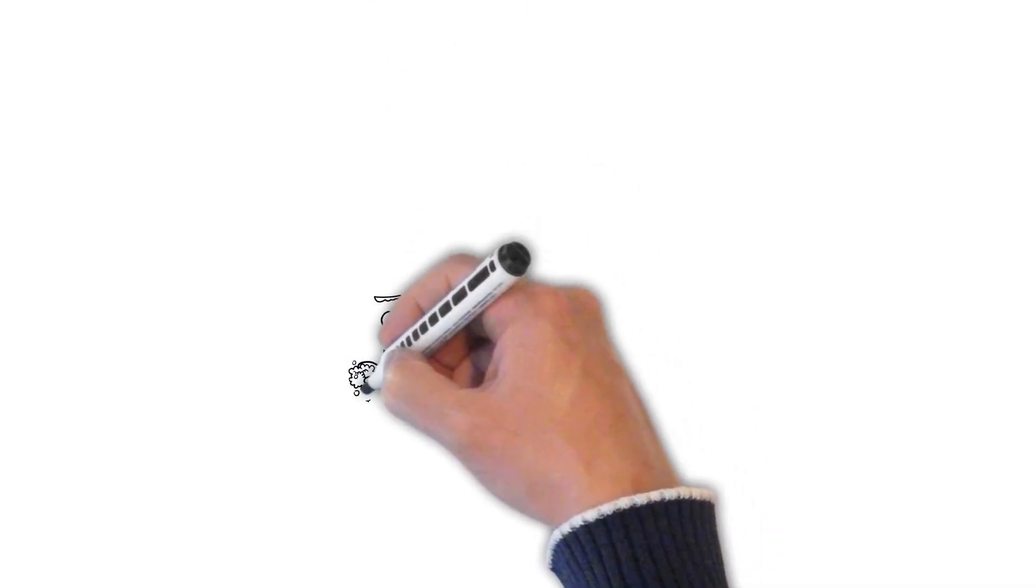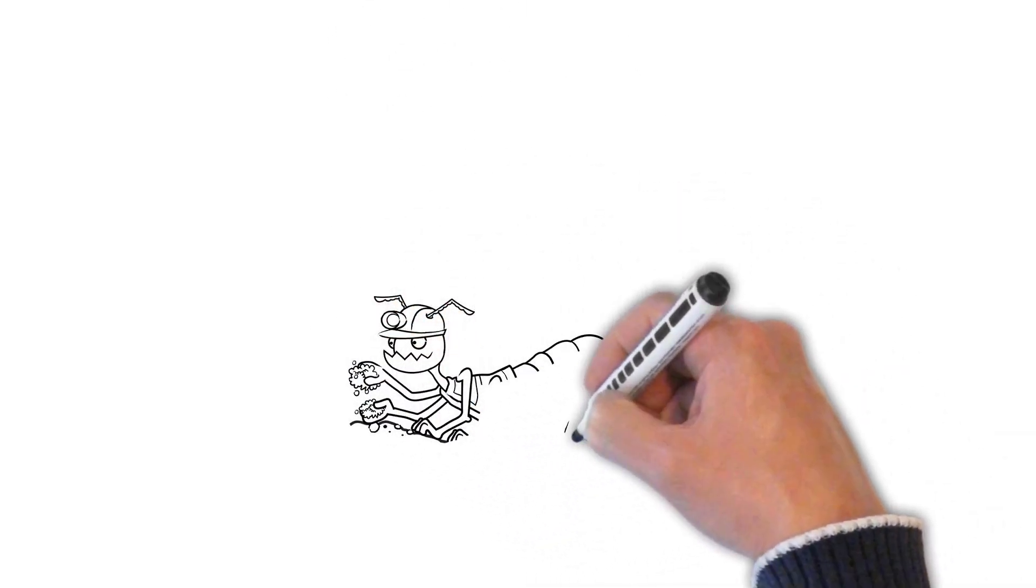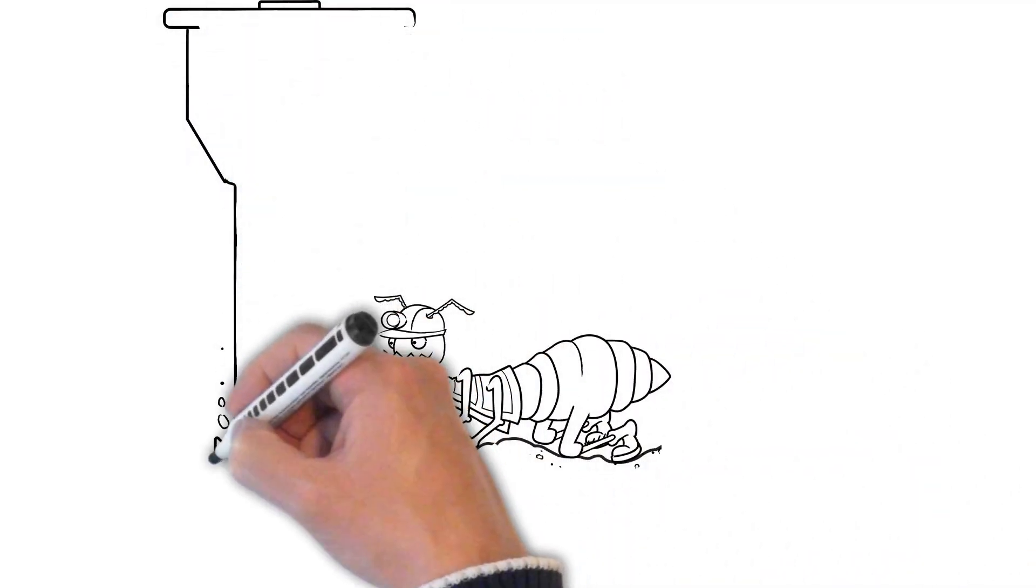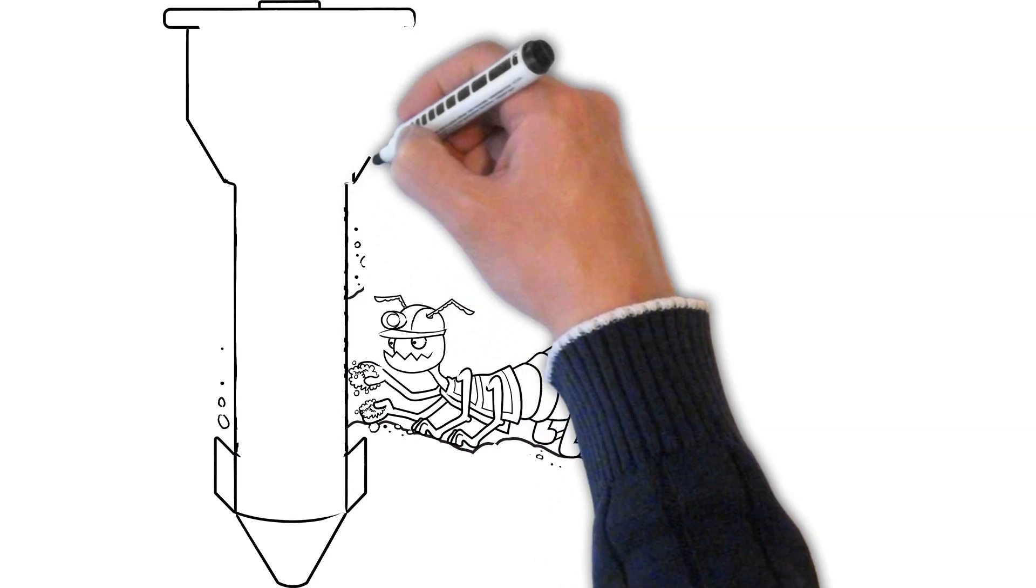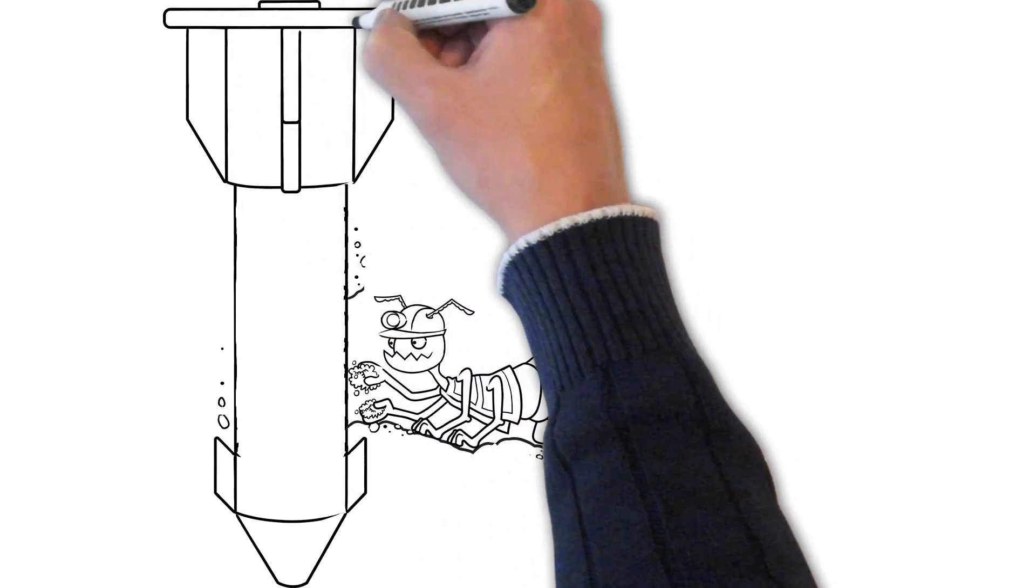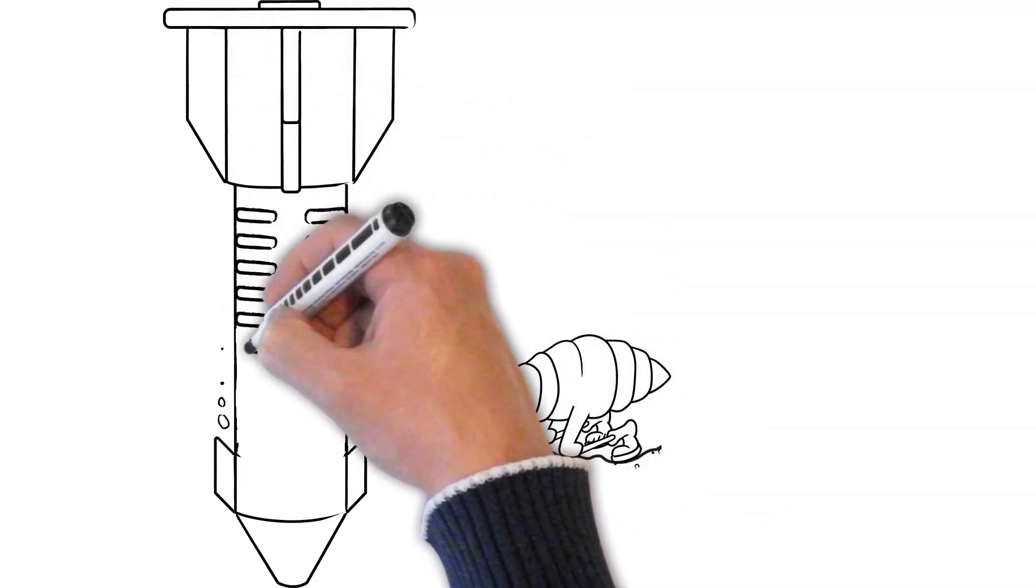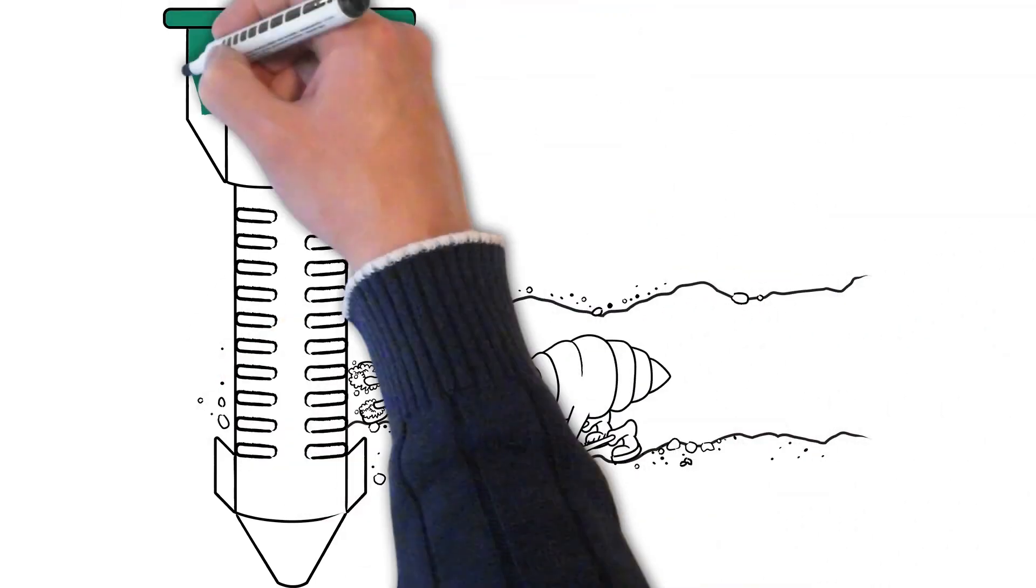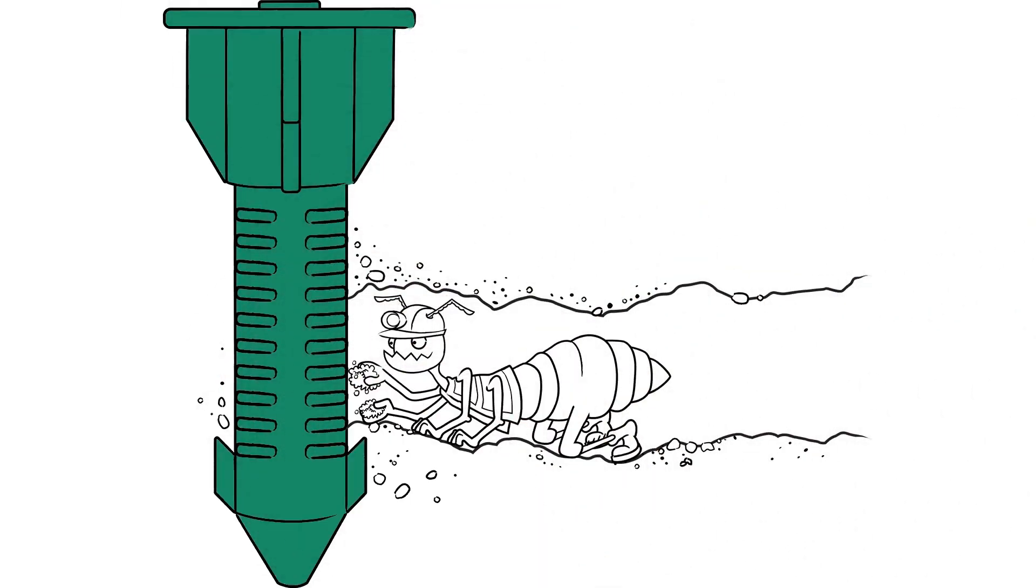So the scenario happens like this: Willie the worker happens upon a Sentricon bait station. He eats the bait because it's been proven termites prefer the bait over wood. Then he heads back to serve up a nice feast for his friends in the colony - except this feast will be lethal and right to the heart of the colony.